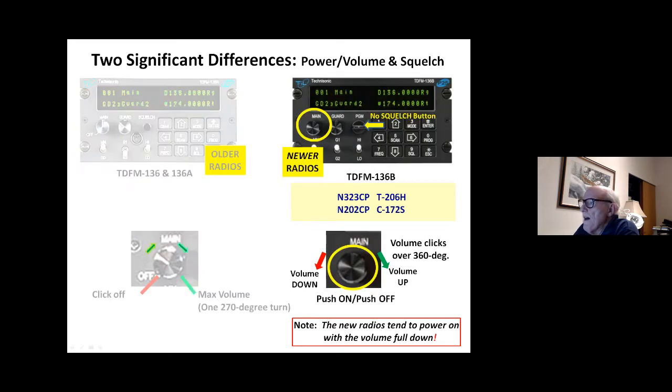The newer B model has the push on push off switch. And then there are detents on the knob and the volume control clicks over 360 degrees. So it just clicks up and it clicks down. So it could come on at full down volume. So just make sure that when you click the B model on again in the 206 and the 172, give the knob a few twists clockwise to make sure that you've got some volume to do a radio check with.